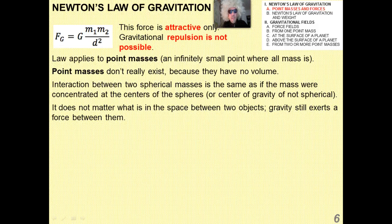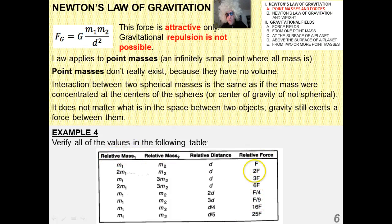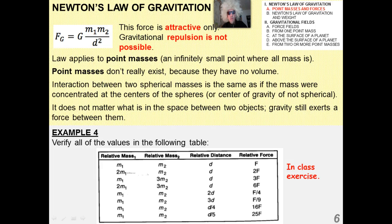The distance between two spheres is taken as the distance between their two centers when using Newton's Law of Universal Gravitation. It doesn't matter what's in the space between the two objects — gravity still exerts a force between them. For Example 4, go ahead and verify all the values in the table of relative masses and relative forces, where you'll see squared numbers on the bottom like 4, 9, 16, and so forth.